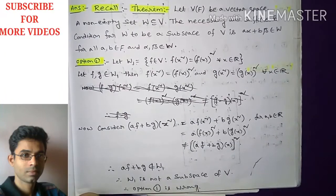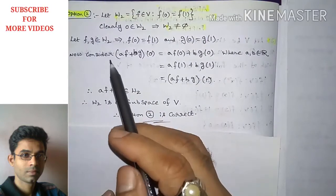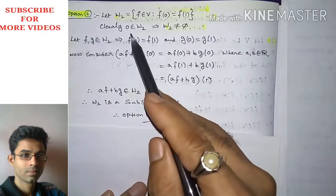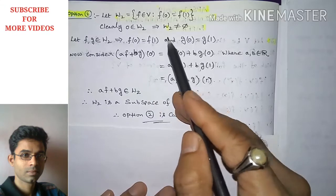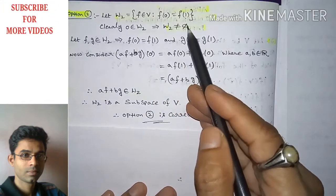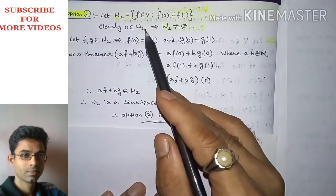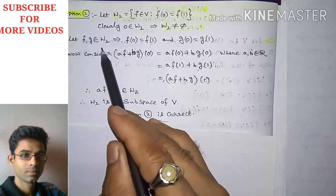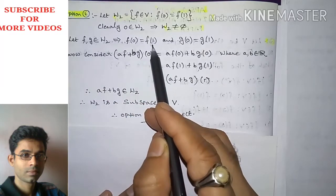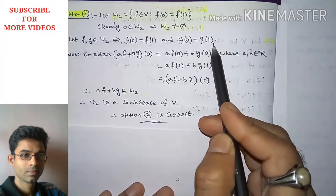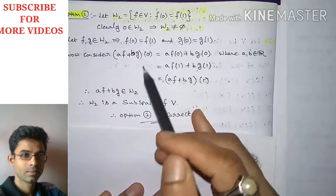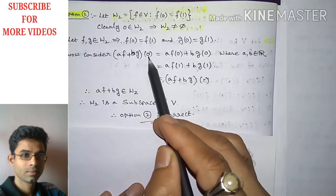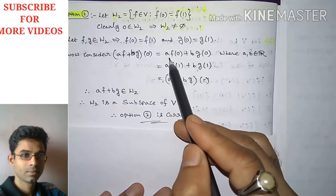Now we check option number two. Let W₂ be the set of all f in V such that f(0) = f(1). Clearly the zero vector belongs to W₂, so W₂ is a non-empty subset of V. To verify W₂ is a subspace, let f, g belong to W₂. By definition of W₂: f(0) = f(1) and g(0) = g(1). We need to show af + bg belongs to W₂, so consider (af + bg)(0).